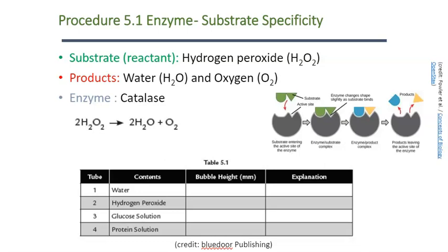In this lab, we're going to look at two different enzymes and how those enzymes work. We're going to start by looking at the enzyme catalase. The catalase that you're going to be working with is catalase taken from potato cells. All cells make catalase, so we could have taken it from human cells, but for ease of working in the lab, our model organism today is going to be the potato.